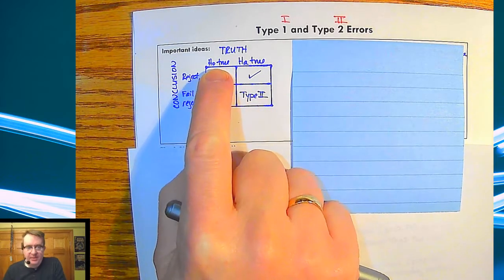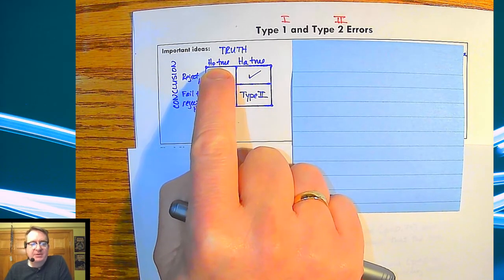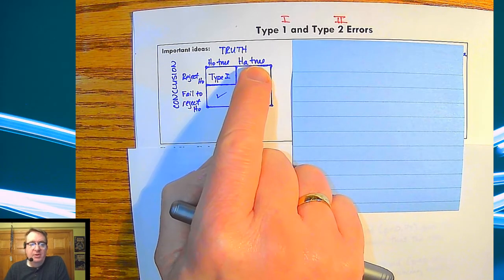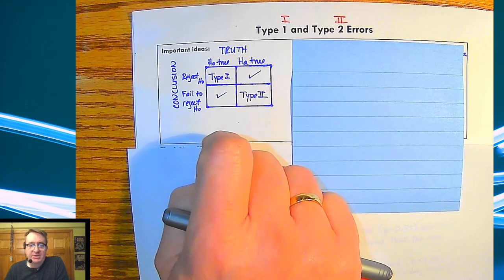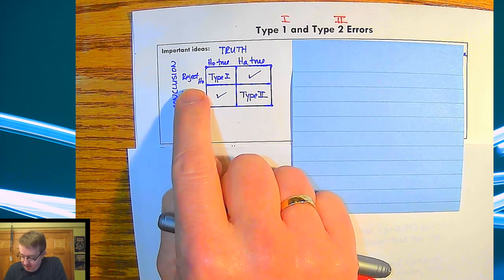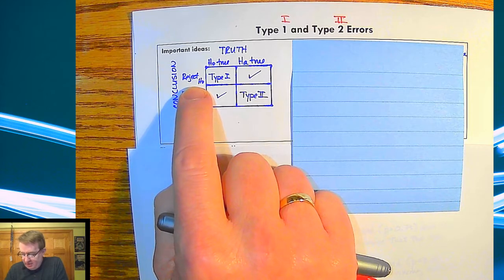So the setup here is this. The null hypothesis is true, alternative hypothesis is true. So the top is what's actually going on. The left side over here is the conclusions that we make. Over here, what happens if we reject the null hypothesis?